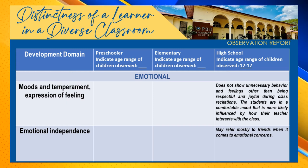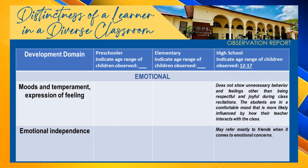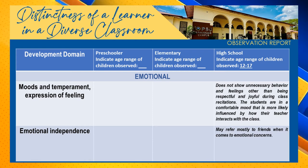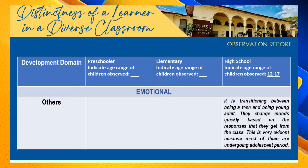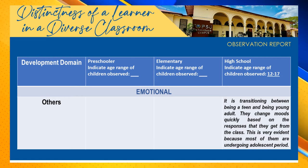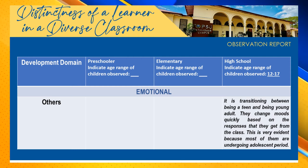Here are our observations under the emotional domain. When it comes to their moods and temperament and expression of feeling, students do not show unnecessary behavior other than being respectful and joyful during class recitations. The students are in a comfortable mood, more likely influenced by how their teacher interacts with the class. Under emotional independence, the students may refer mostly to friends when it comes to emotional concerns. The students are transitioning between being a teen and being a young adult, and they change moods quickly based on the responses they get from the class. This is very evident because most of them are undergoing the adolescent period.